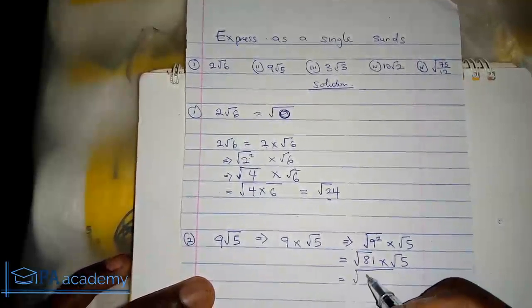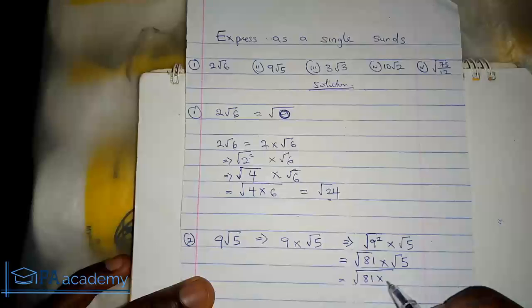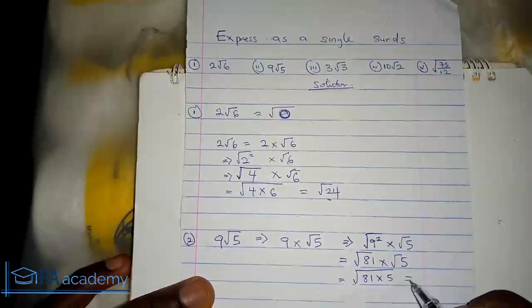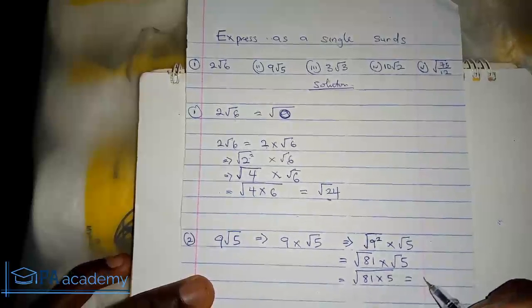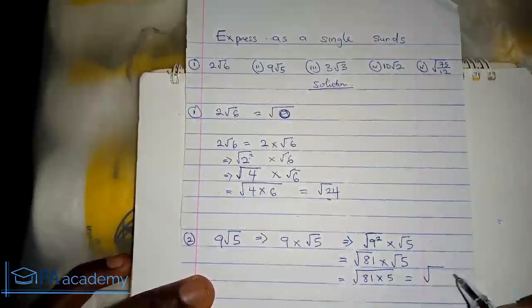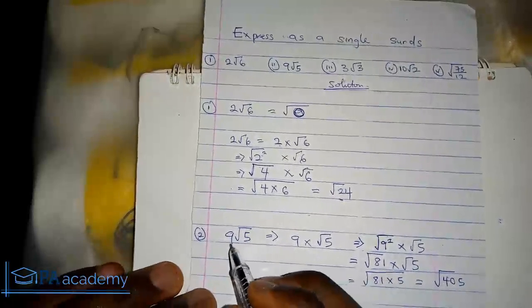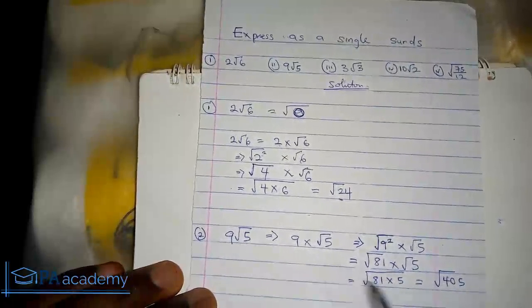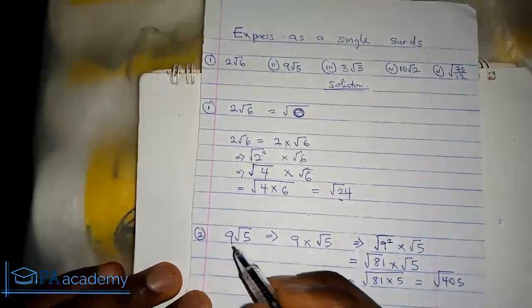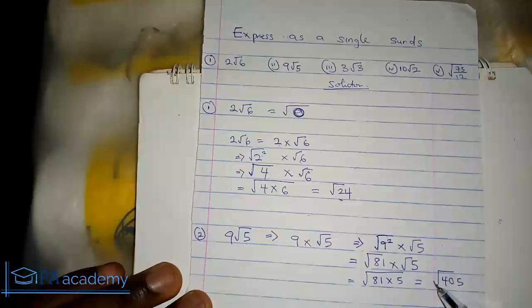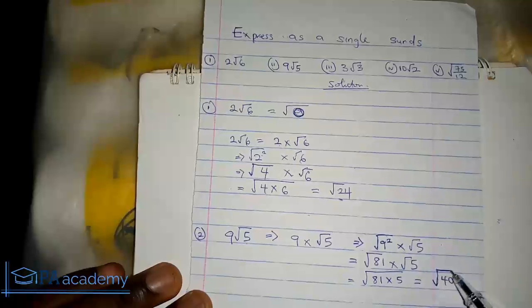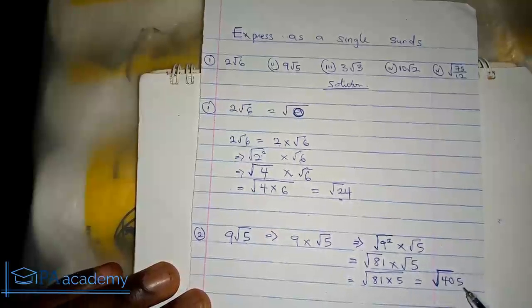So we have √81 times √5, which gives us √(81×5) = √405. So 9√5, expressed as a single surd, is √405.